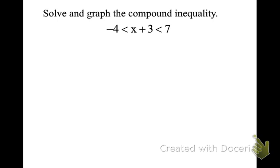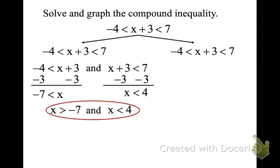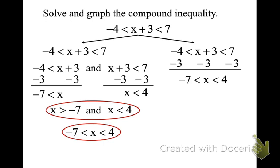There are a couple different ways to do this. Look at the way on the right — it's faster. I could break this up into two inequalities: negative 4 is less than x plus 3, and x plus 3 is less than 7, then solve them both — but that's double the work. If I have this in-between statement, I can subtract 3 from all three parts, and now I have my in-between final answer. It's a lot easier to solve on the right-hand side — just isolate your x.